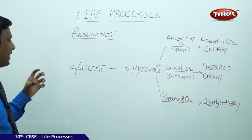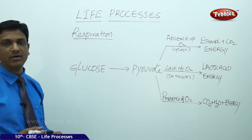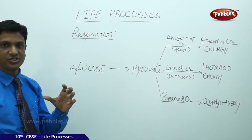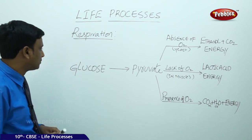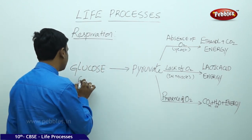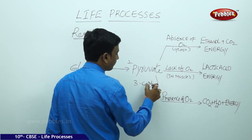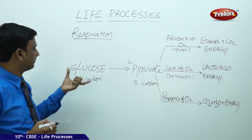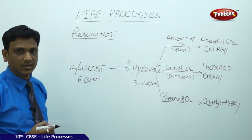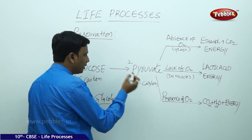Let us see how energy is liberated from glucose through the different stages of cellular respiration. In the cytoplasm of the cell, glucose is converted to pyruvate or pyruvic acid. Glucose is a six-carbon compound which is converted to two pyruvate molecules of three carbons each. This process is called glycolysis — the breakdown of glucose into two molecules of pyruvic acid — and it takes place in the cytoplasm.